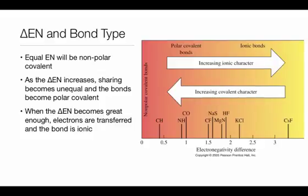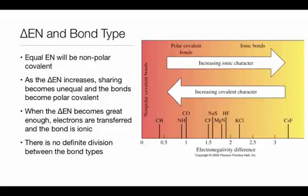If the electronegativity difference gets great enough, sharing becomes so unequal that we essentially have a transfer of electrons from one atom to another, and this is what we would call an ionic bond. Notice on this little table or diagram that I have, we've got electronegativity differences represented and we have some examples of compounds, but nowhere on this do we have a definitive division between polar covalent, covalent, and ionic compounds. That's because electronegativity is just one factor that we are going to take into consideration when looking at what type of bond we have.